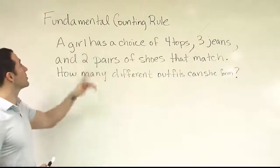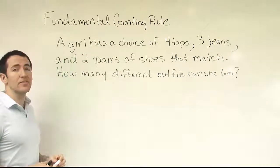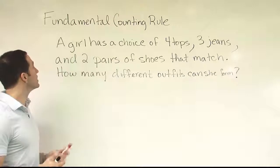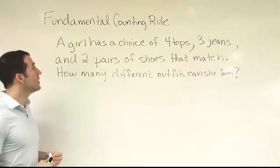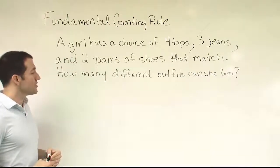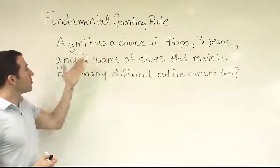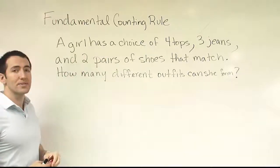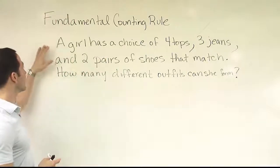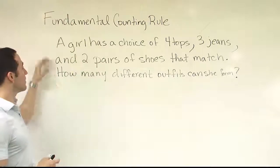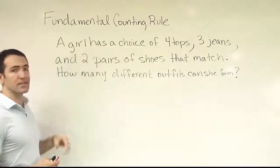So we're going to develop these techniques by starting with the most basic one, the fundamental counting rule. So what does the fundamental counting rule allow us to do? It actually allows us to determine the number of possible outcomes for scenarios like this. We can figure out how many different outfits, for example, this girl can create with these items in her closet.